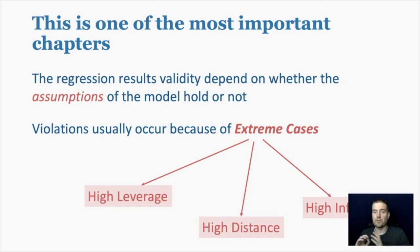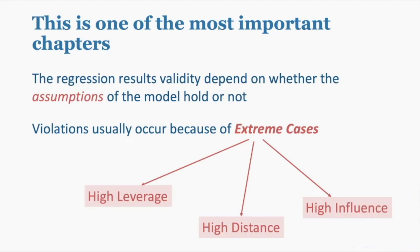often occur because of extreme cases. Sometimes it's just the nature of a variable. It's just really skewed or something like that. But often it can be because of extreme cases. We're going to talk about three different ways of talking about extreme cases. There's high leverage, high distance, and high influence. We'll define each of those in turn.